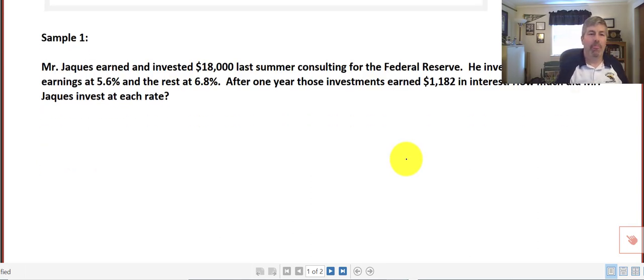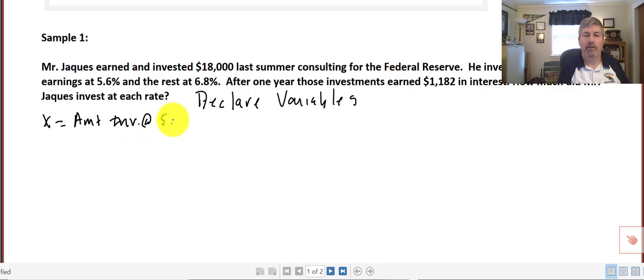We're going to do a word problem sample here. Mr. Jakes earned and invested $18,000 last summer consulting for the Federal Reserve. He invested some of his earnings at 5.6 percent and the rest at 6.8 percent. After one year those investments earned $1,182 in interest. How much did Mr. Jakes invest at each rate? Let's start by declaring our variables. What are our unknowns? And if you're wondering why he doesn't invest all at the higher rate, well that's a good question for Mr. Jakes.